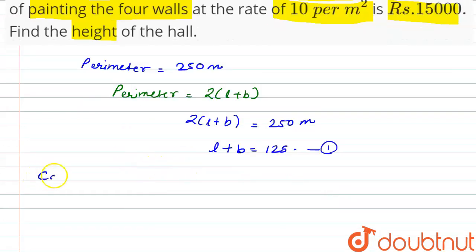Now we are given that the cost of painting four walls is Rs. 15,000 and the rate of painting is given as Rs. 10 per meter square.